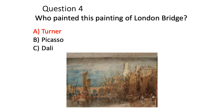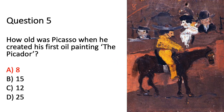Question four: who painted this painting of London Bridge? It is Turner. Question five was about how old Picasso was when he created his first oil painting, Le Picador — and he was only eight. A picador is a person on horseback taking part in a bullfight, and his dad used to take him to lots of bullfights from when he was seven.